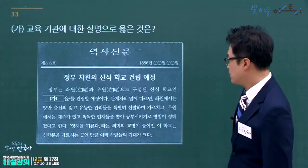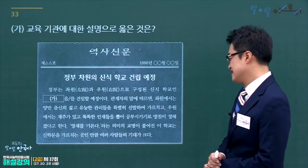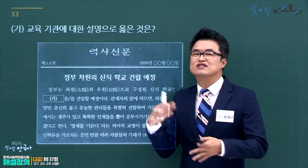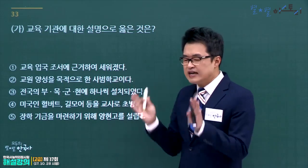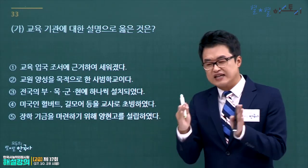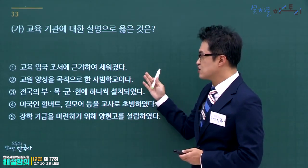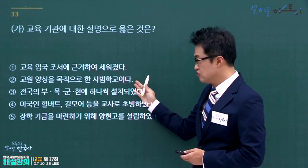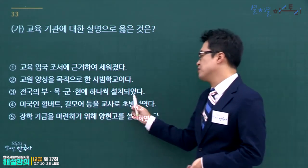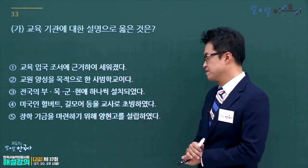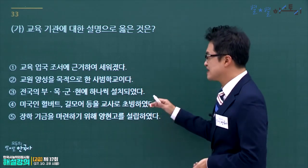영재를 기른다는 내용의 교육기관은 육영공원입니다. 육영공원에 대한 설명을 고릅니다. 교육입국조서 이전에 있었던 학교가 동문학과 육영공원입니다. 교원 양성 사범학교는 교육입국조서 이후이고, 부목구년 교육은 전근대 향교 내용, 장학기금 양현고 설립은 고려 국자감입니다. 미국인 헐버트와 길모어 등을 교사로 초빙한 것이 육영공원이므로 정답은 4번입니다.